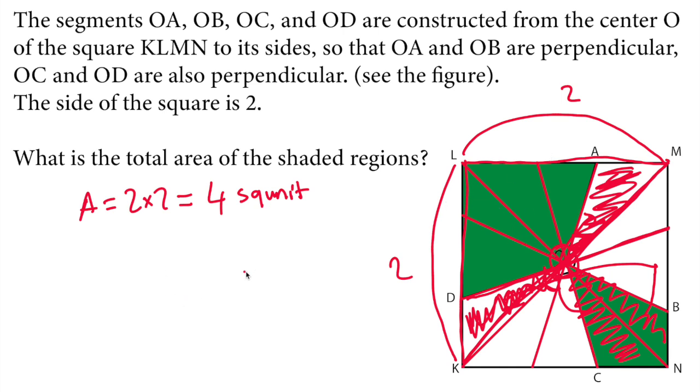Therefore, the green area total will be one half of the area. The area we found is 4, so the green area will be 2 square units.